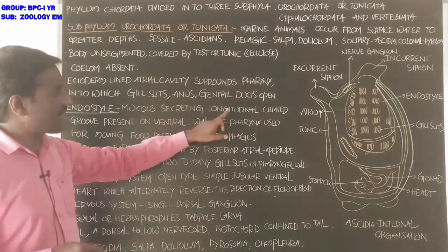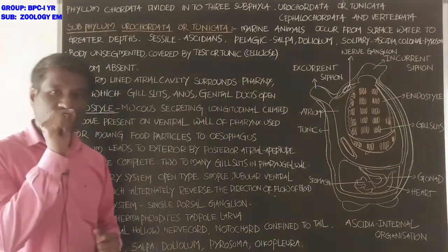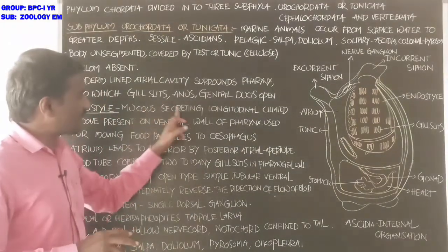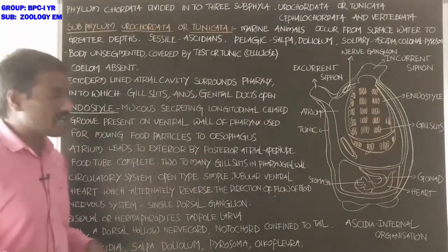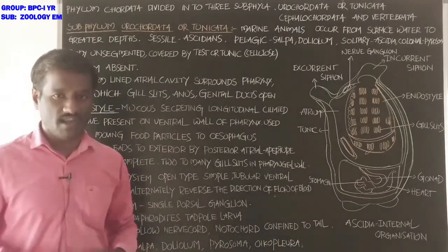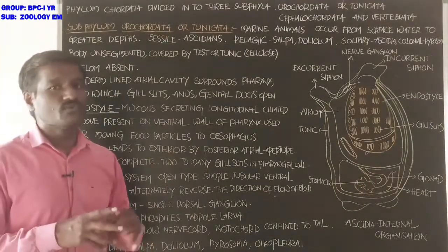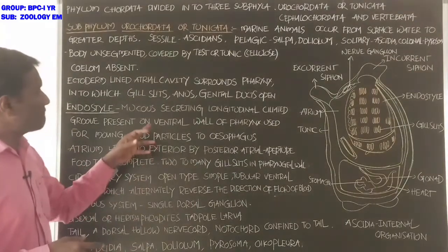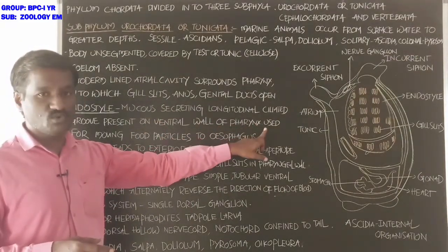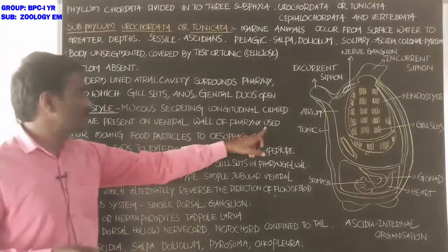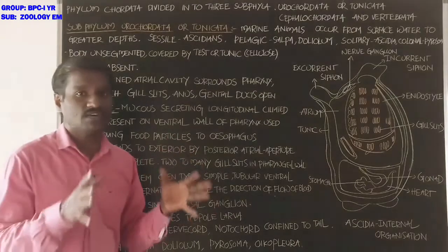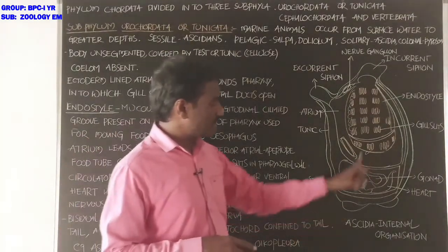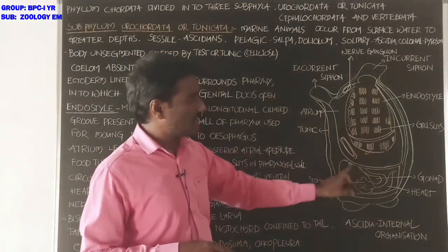The endostyle is a mucus-secreting longitudinal ciliated groove present on the ventral wall of the pharynx. It is believed to be the forerunner of the thyroid gland of higher chordates. It is used for moving or accumulating food particles into the esophagus.